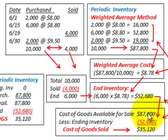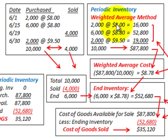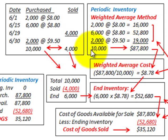So that's how we use the periodic inventory method with the weighted average cost. You take the units purchased times their unit cost to get the total dollar amount, divide by the total number of units to get the weighted average cost, and from that determine your ending inventory and cost of goods sold.